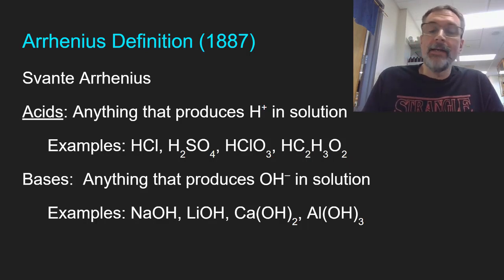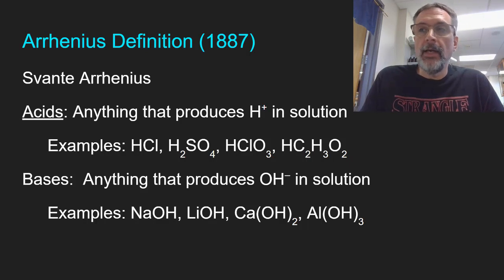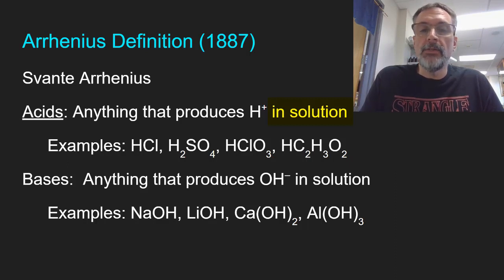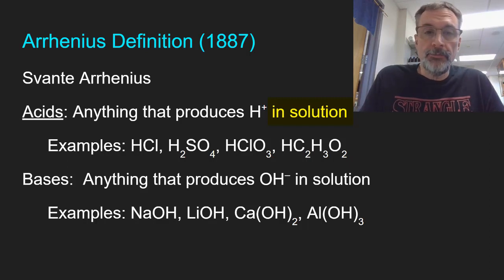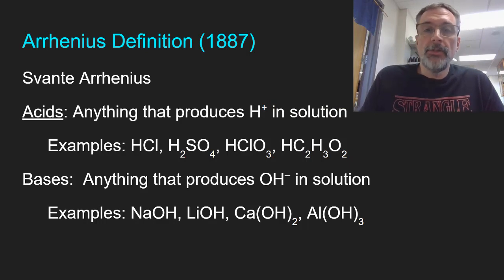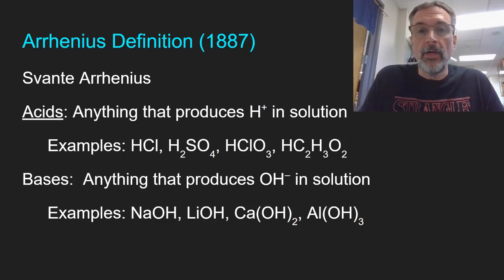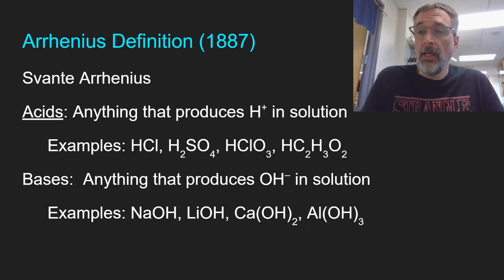Arrhenius defined an acid as anything that produces H+ ions in solution. The 'in solution' part is really important — it means that in order for something to be an acid, it has to be dissolved in water. We know that an acid contains an anion like chloride, sulfate, chlorate, or acetate, and the cation is H+.